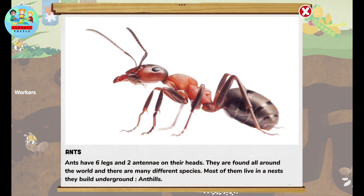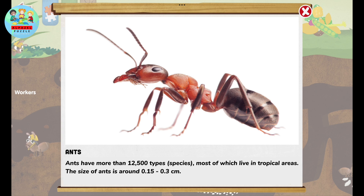Ants have six legs and two antennae on their heads. They are found all around the world and there are many different species. Most of them live in the nests they build underground, called ant hills.